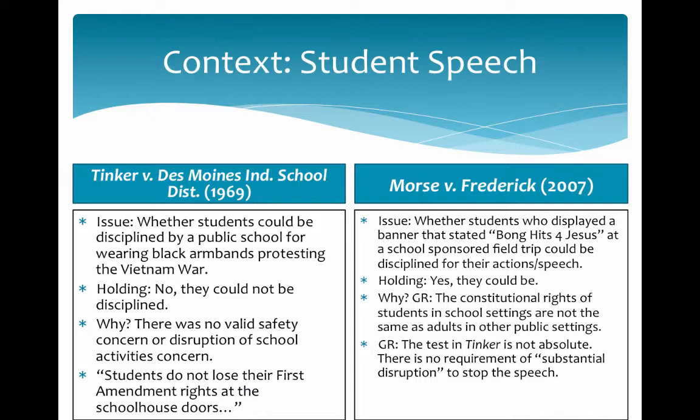The Supreme Court said the discipline was improper. While the rights of students in a K-12 setting are different than the rights of adults out on the street, students do not lose their First Amendment rights at the schoolhouse doors. Because there was no valid safety concern, no disruption of school activities, no real reason to discipline them, the court said the discipline violated their First Amendment rights.